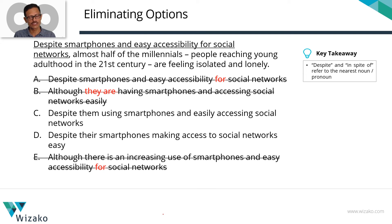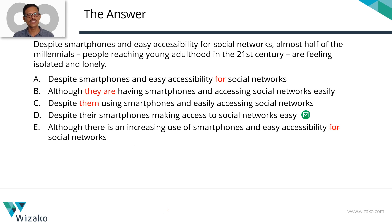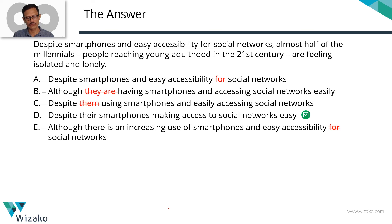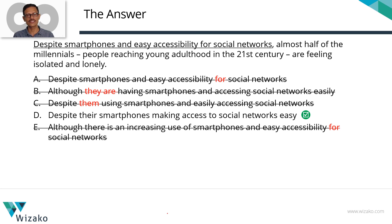Choice C is also incorrect, which leaves us with choice D. Let's read it: 'Despite their smartphones making access to social networks easy, millennials are feeling isolated.' Here 'despite' is referring to 'their smartphones' — a proper noun/subject. The modifier correctly refers to the millennials, which is exactly what it should do. The correct answer is choice D.